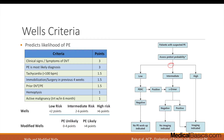Based on their Wells score: less than 2 is low risk, 2 to 6 is intermediate risk, and greater than 6 is high risk — and that determines the next steps. The modified Wells Criteria uses the same criteria and point system, but simplifies it into two categories: PE unlikely if less than 4, and PE likely if greater than 4.